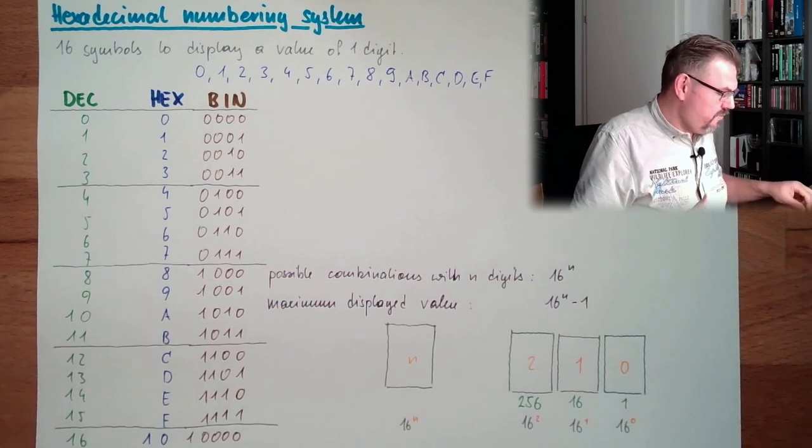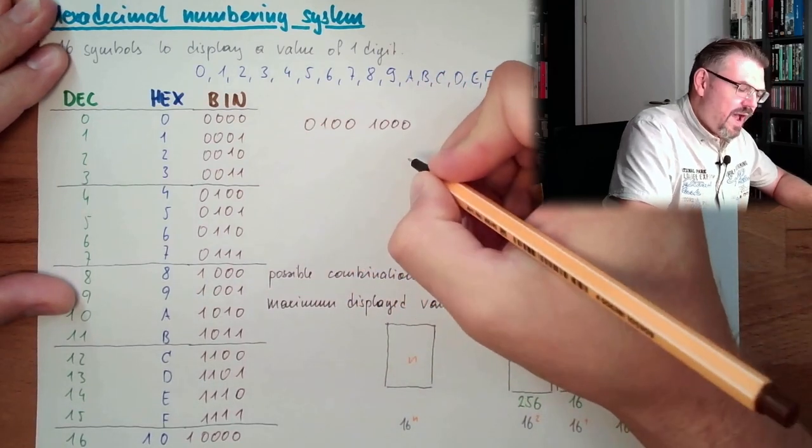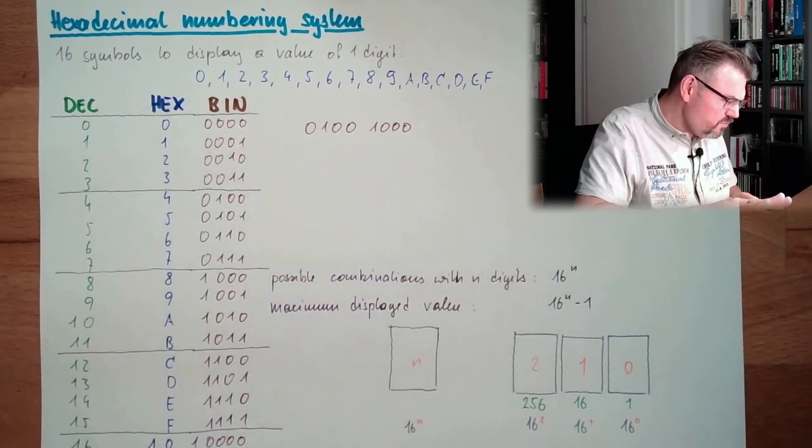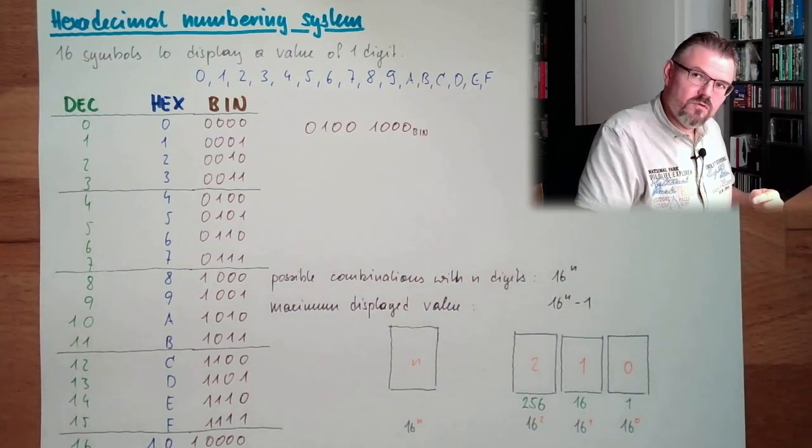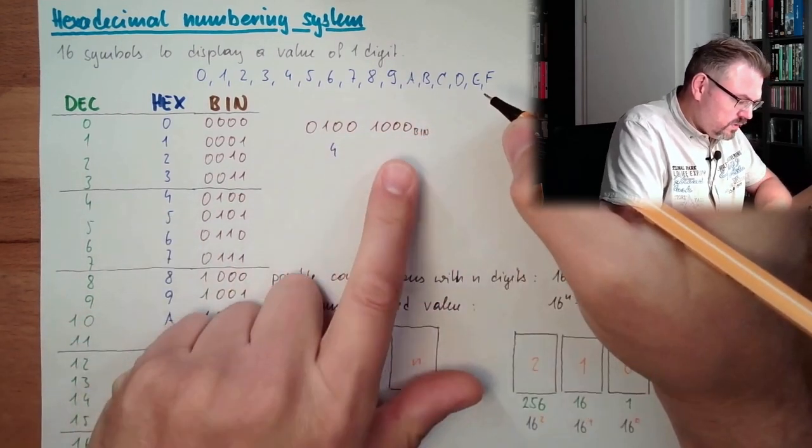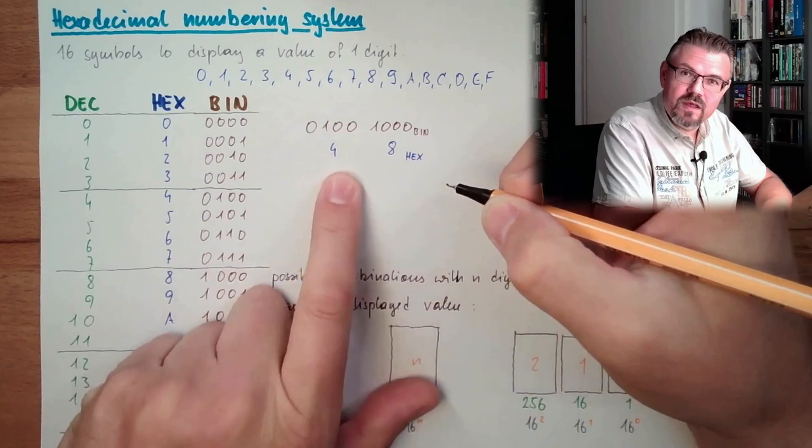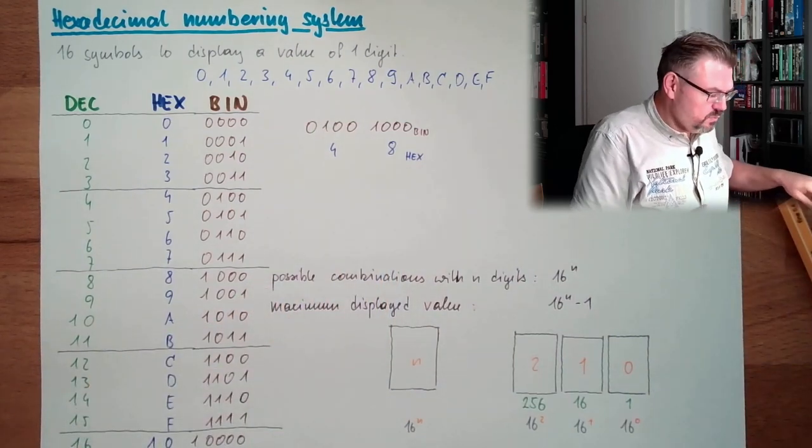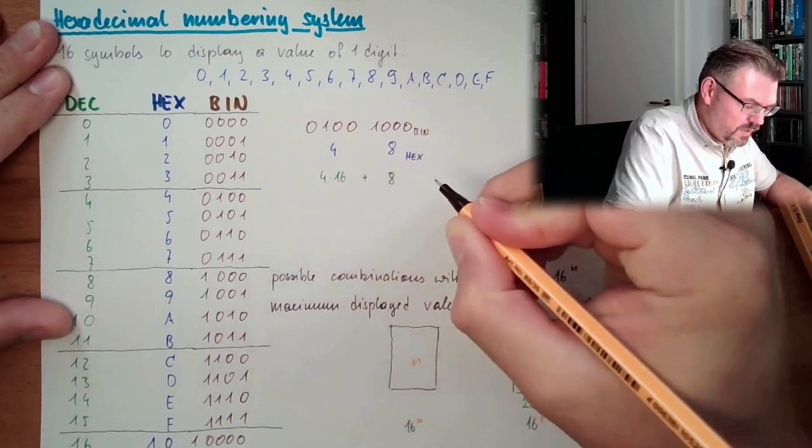So if we have, for instance, a binary number, I don't know, 01001000, I can immediately take the blocks, 4 bits. I can immediately transfer it to hexadecimal. Hexadecimal, this is 4, and what is this? This is 8. And I have to note hex, it's not 48 decimal, it's 48 hexadecimal. This is totally different, because it would be, then in decimal, this would be 8, 4 times 16, plus.